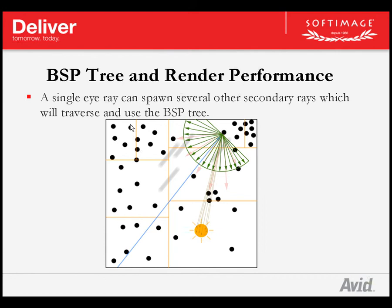The same applies to final gathering. Final gathering requires ray tracing to be on, and it will spawn many rays in the scene in order to compute occlusions and indirect light contribution for each intersection point. For example, if the final gathering accuracy is set to 1000, you can assume that 1000 final gathering rays will be cast for every 4 pixels, which involves a lot of back-and-forth tracing in the BSP-Tree.